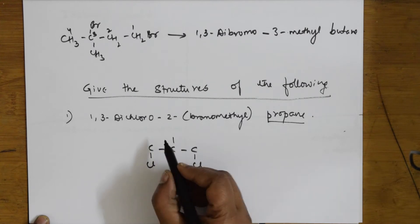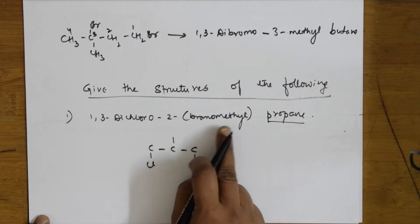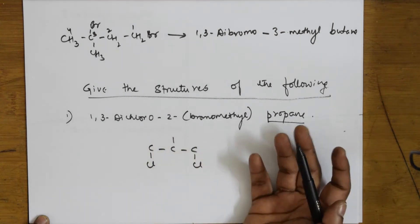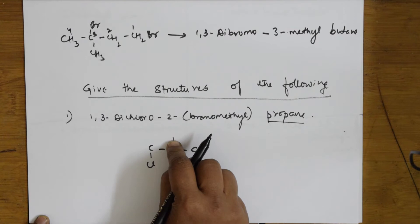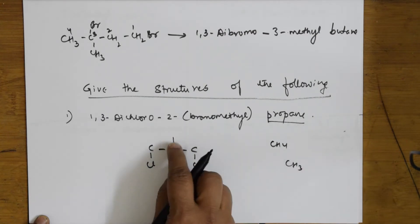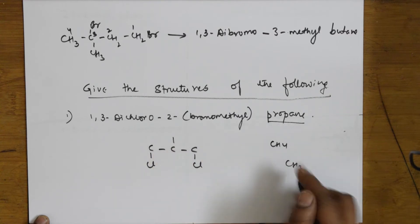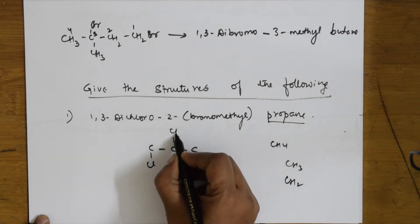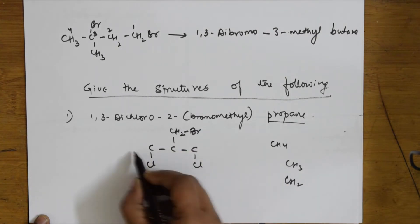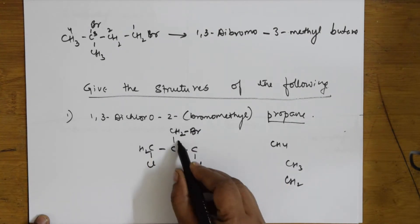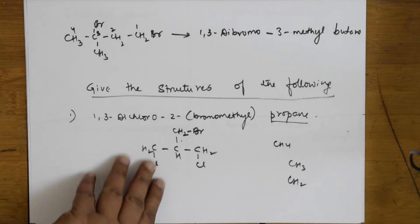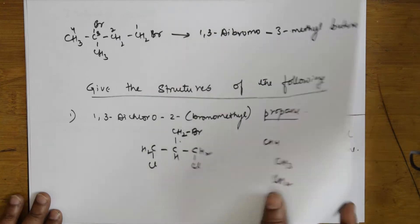In the second carbon there is bromine, and along with that there is a methyl group also. Methyl means CH₄, but I can't write CH₄ because one bond is already shared here. With one more bond shared by bromo, this becomes CH₂Br. So filling hydrogens: CH₂, CH, CH₂.